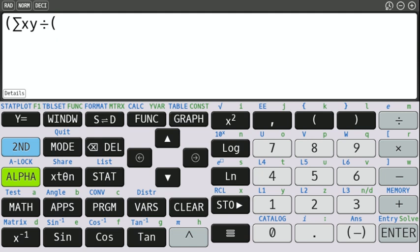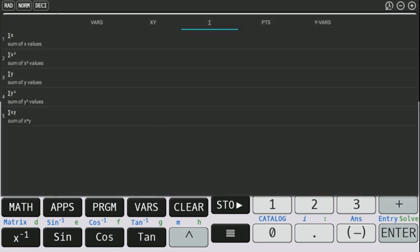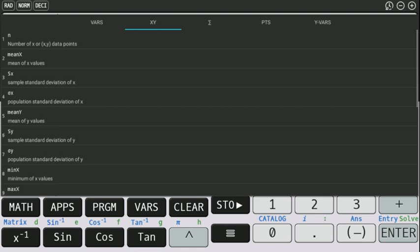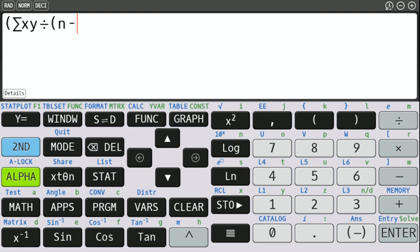Now I could just put in eight on here. That's fine because we know that there was nine items of data, but if you want to just do the whole thing using the vars button, just to kind of see how it works, hit the vars button again. Now N is under the XY menu. I'm not sure exactly why, but that's where it is. So N minus one, close the parentheses that we opened for the N minus one, and also the one that we opened on the left side of the summation button for XY.